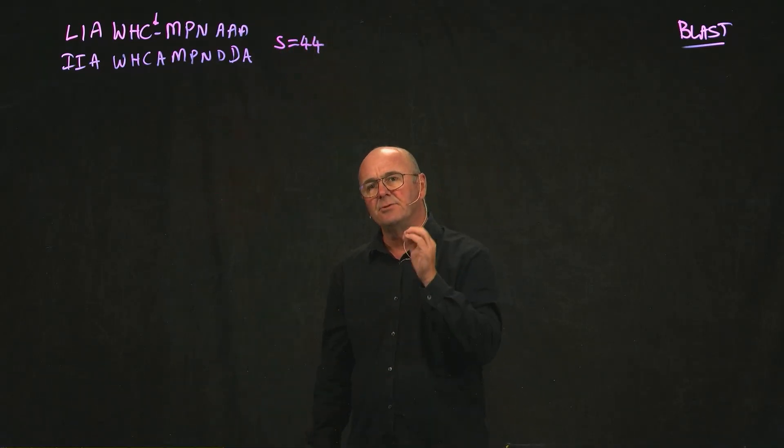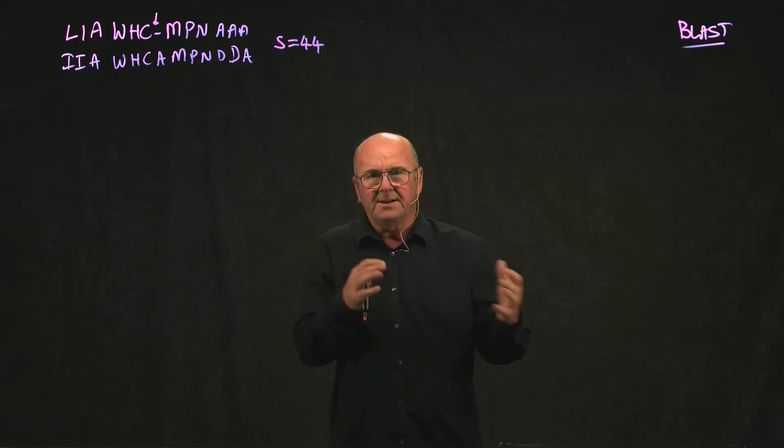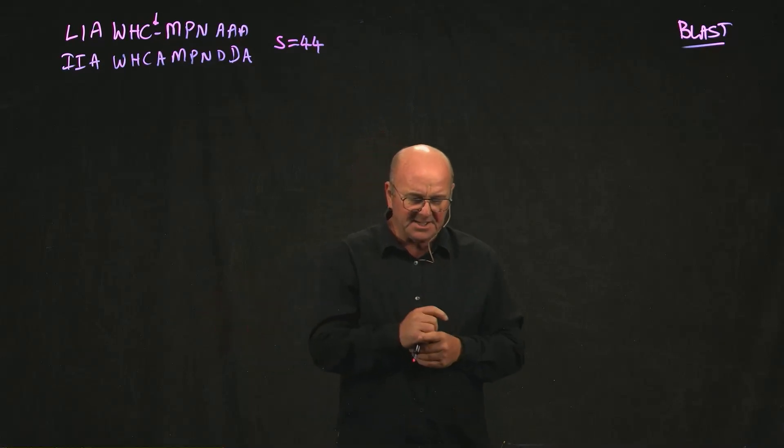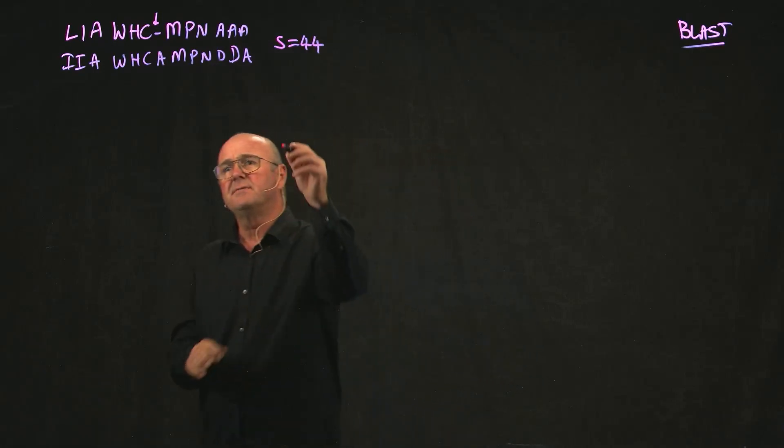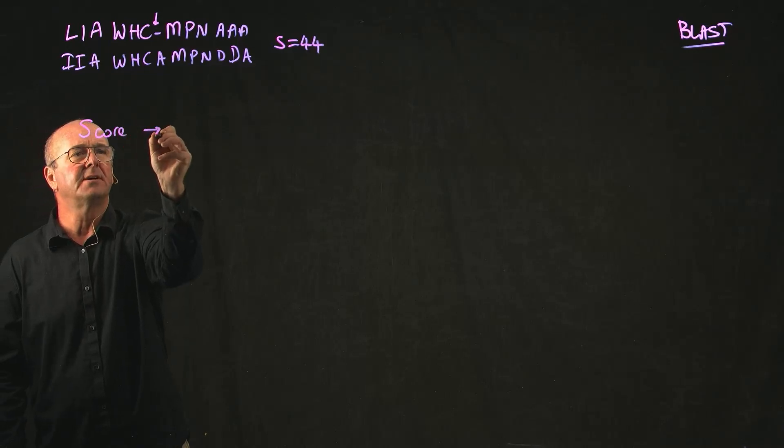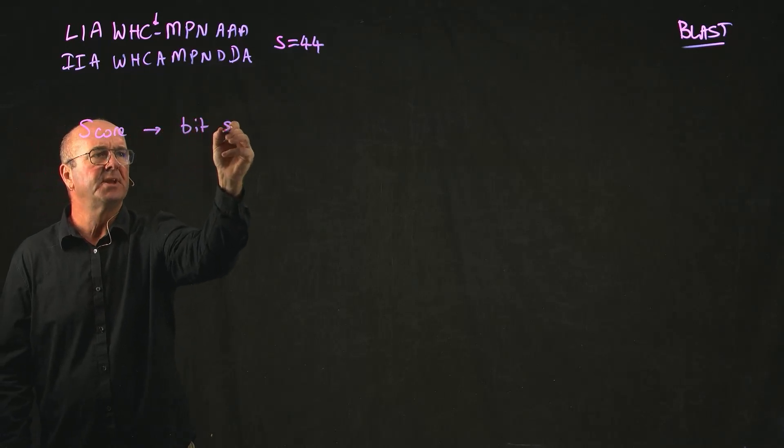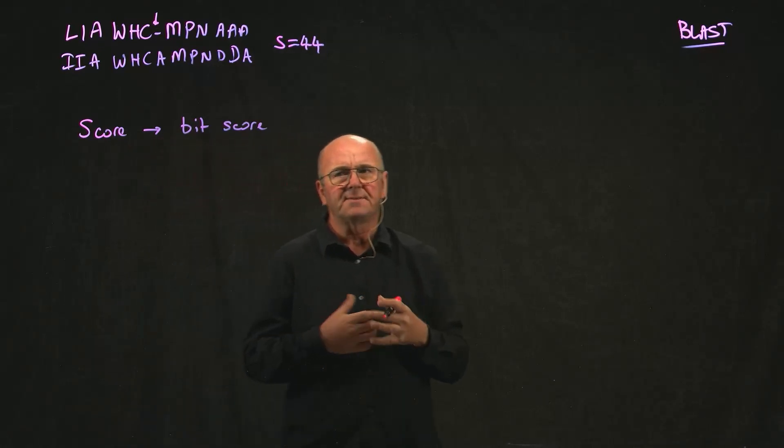So that's our raw score, which is just a number that kind of doesn't really relate to anything. We call that the score, and we can convert from the score to a bit score.